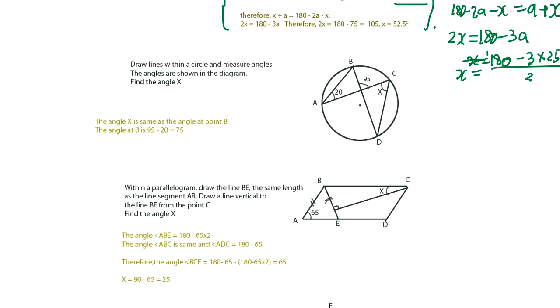Let's go to the next question. Draw lines within a circle and measure angles. The angles are shown in the diagram. Find the angle X. So draw a line. This is center. So this line doesn't go through center. And one thing you know is 20 degrees and 95 degrees. What is X? Do you remember the theorem?